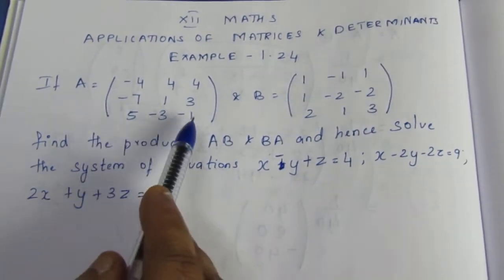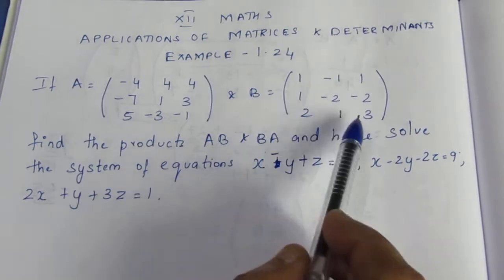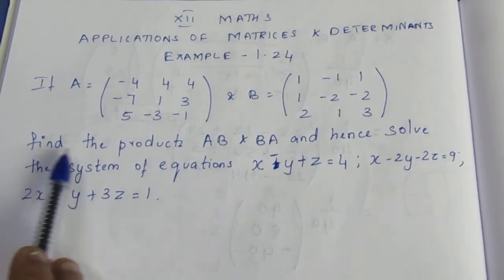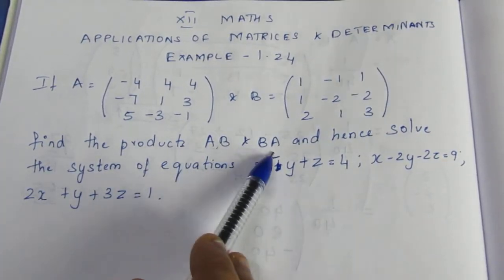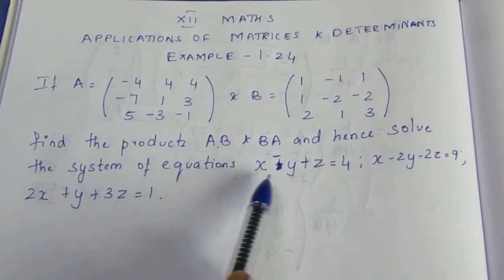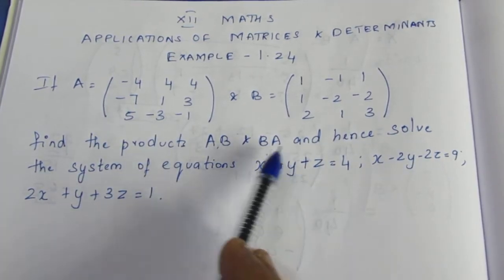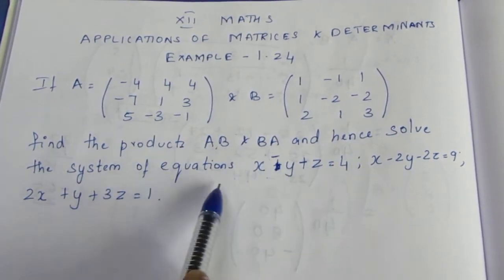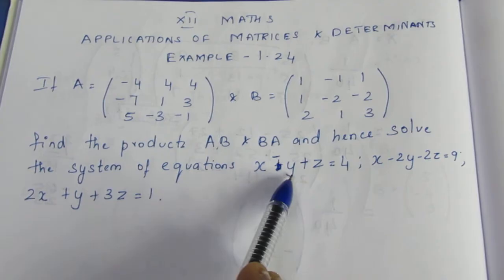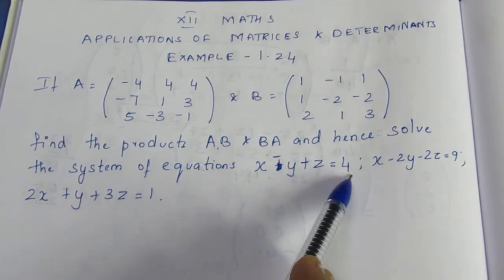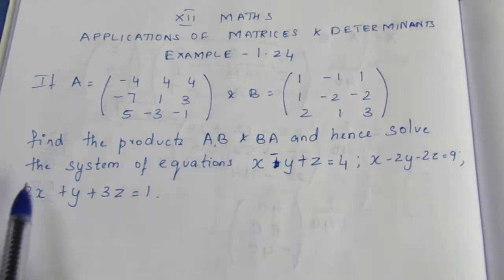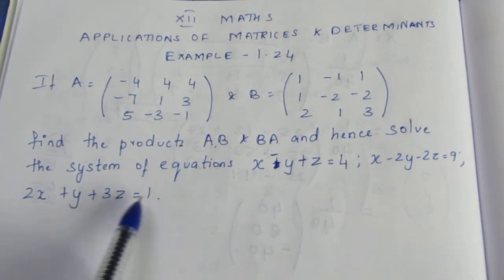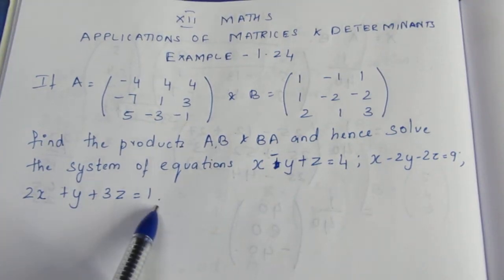If A is equal to our given matrix, B is equal to our given matrix, find the products AB and BA, and solve the system of equations: x minus y plus z equal to 4, x minus 2y minus 2z equal to 9, 2x plus y plus 3z equal to 1.